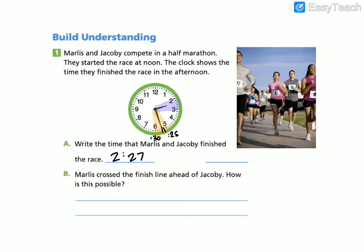Now, letter B says that Marlise crossed the finish line ahead of Jacoby. How is this possible? So if they both finish the race at 2:27, do we have another measurement of time past a minute? Well, we also have seconds, right? So how is it possible? She crossed seconds before him.